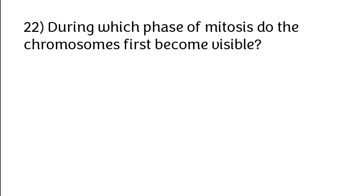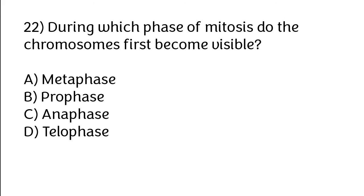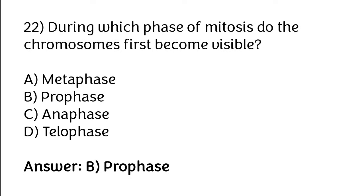During which phase of mitosis do chromosomes first become visible? Options: metaphase, prophase, anaphase, telophase. The correct answer is option B — during prophase of mitosis, chromosomes first become visible.